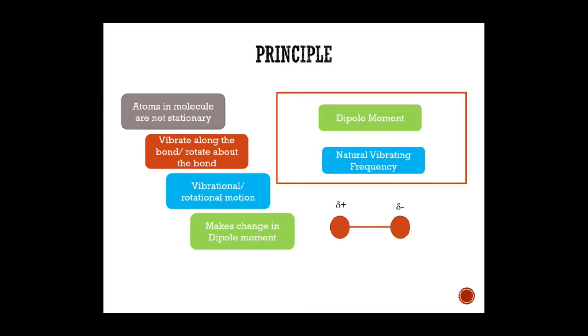This produces an alternating electric field which propagates in the form of a wave and has a certain frequency. When this frequency matches with the natural vibrating frequency, then that particular wavelength of radiation is absorbed.